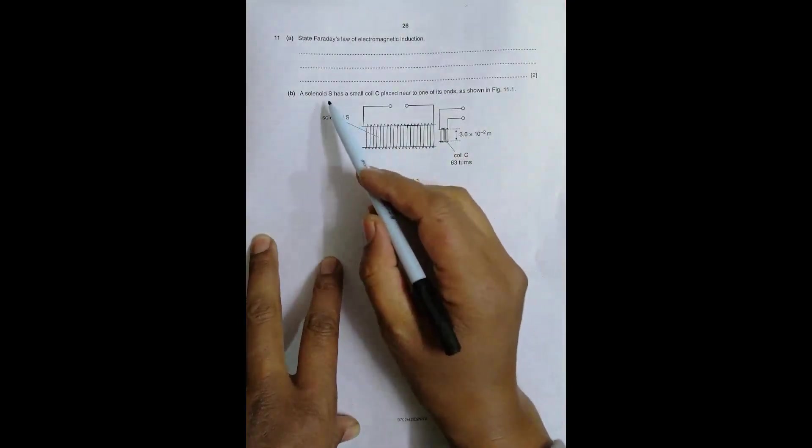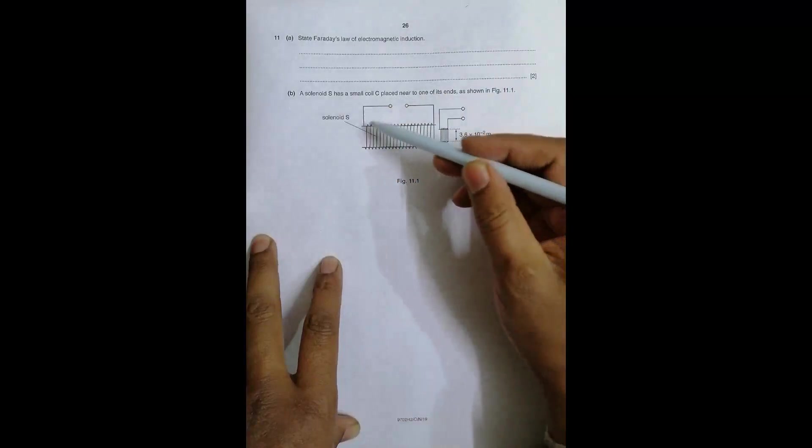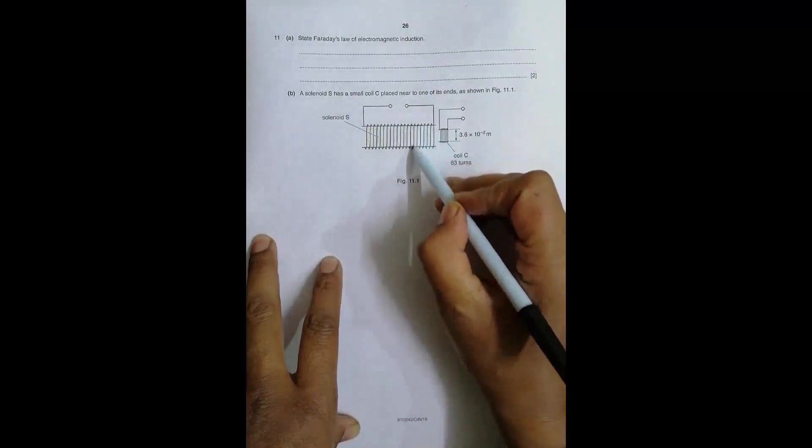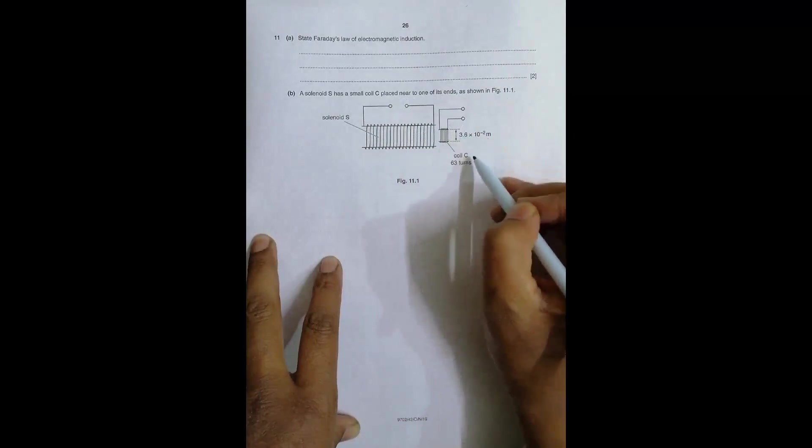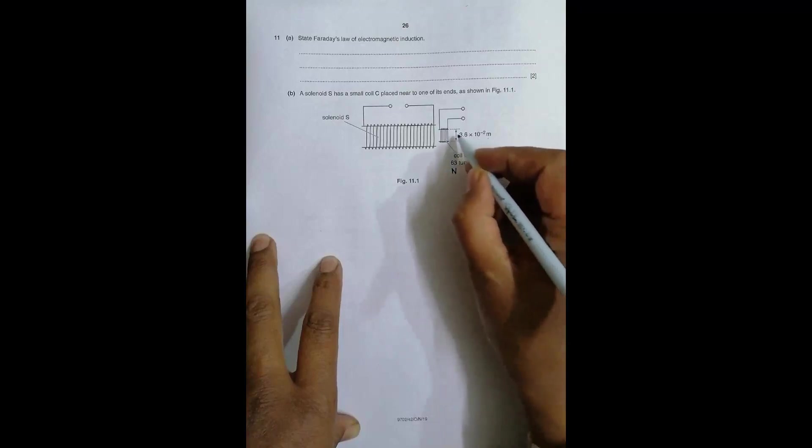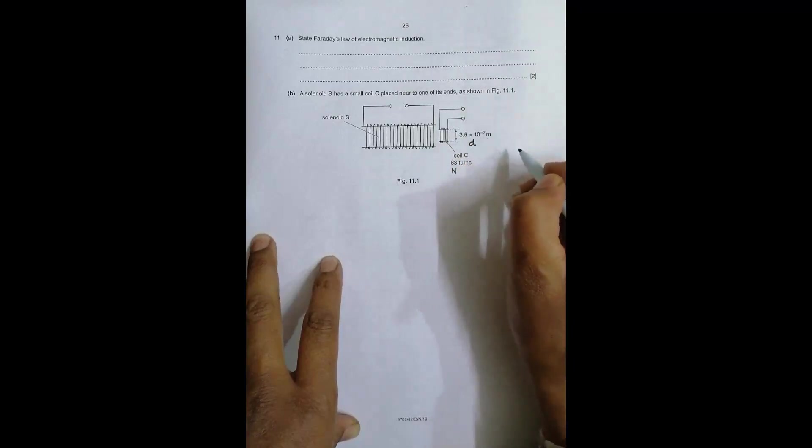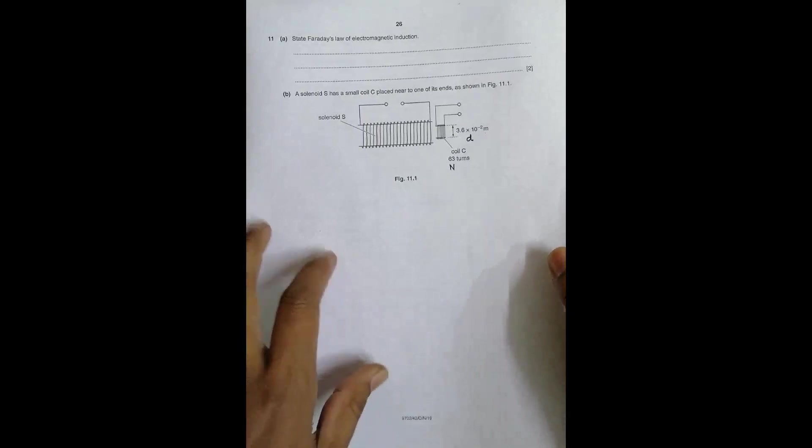Solenoid S has a small coil C placed near one of its ends. This is the solenoid S, you can see the windings here, windings coming from here and going here, and we have another small coil here with 63 turns. This is N and this is the diameter D of the coil.